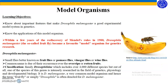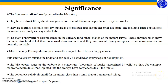As you can see here, a picture of this organism which mostly resides on bananas. These flies are small and easily reared in the laboratory. They have a short life cycle — a new generation of adult flies can be produced every two weeks. Females are fecund; a female may lay hundreds of fertilized eggs during a brief lifespan, and the resulting large populations make statistical analysis easy and reliable. These organisms also have giant or polytene chromosomes in the salivary gland and other glands of the mature larvae, which show far more structural detail than normal chromosomes and are present during interphase when chromosomes are normally invisible.